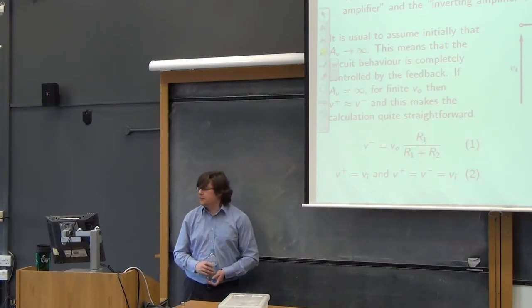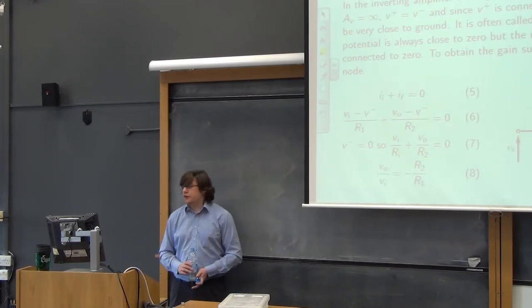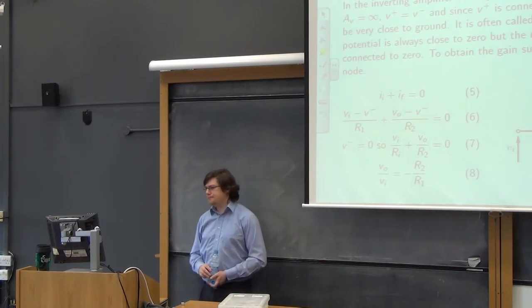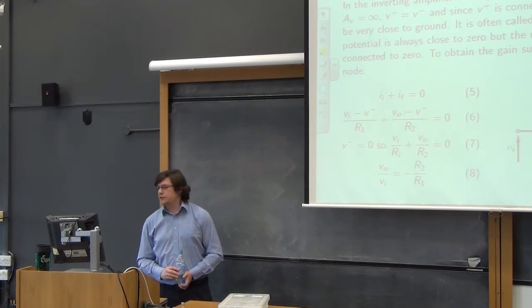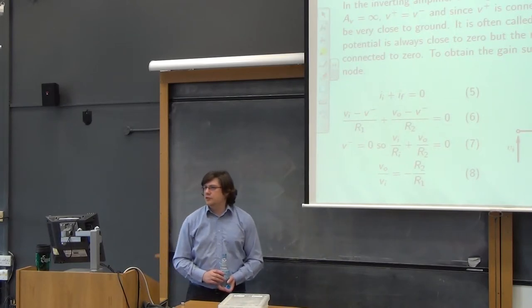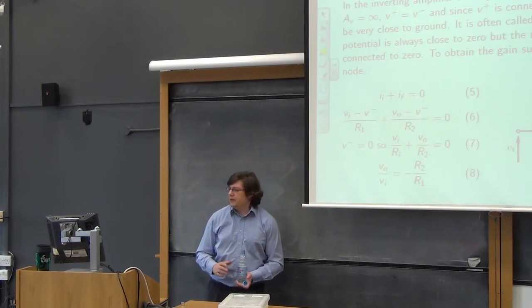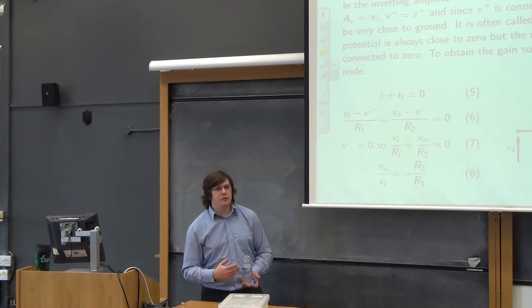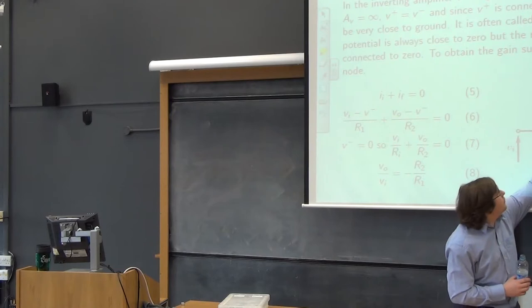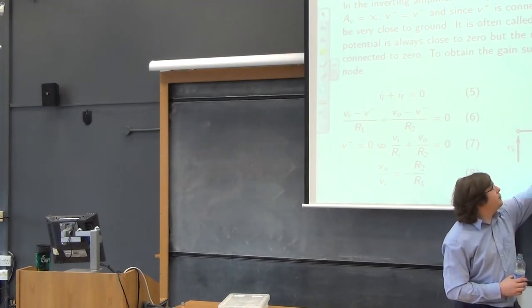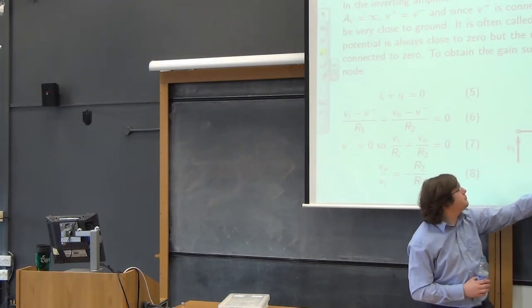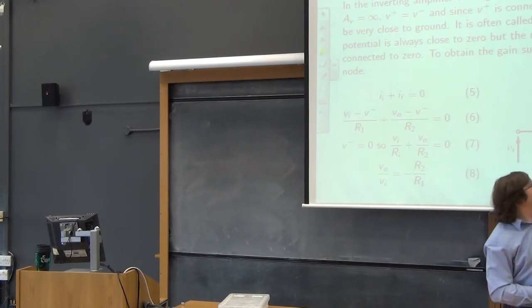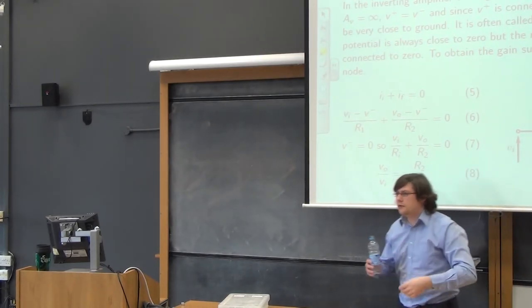There is another configuration — the inverting amplifier — which gives gains of minus one or more. The analysis is slightly different: instead of worrying about voltages, we worry about currents. Because the amplifier is perfect, its impedance looking into its inputs is infinite. If the impedance is infinite, there can be no current flowing into that pathway. So all the current that flows into this node — II — and all the current IF must be equal to each other; otherwise current would be created or destroyed, which isn't allowed.